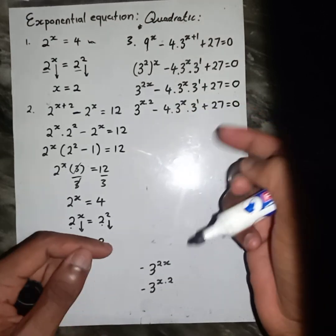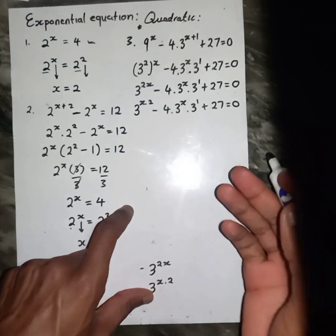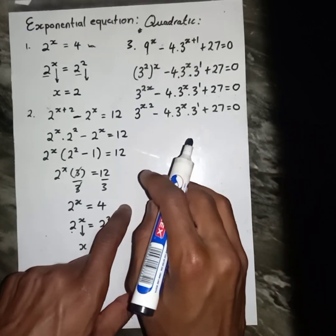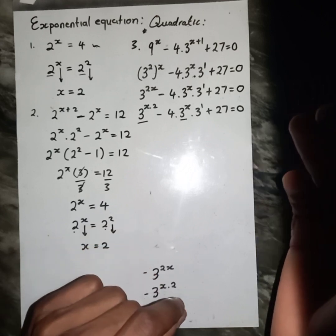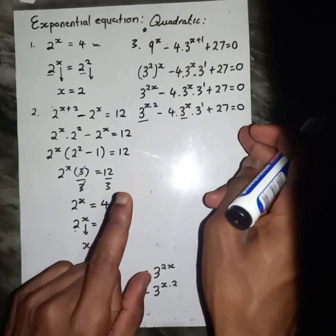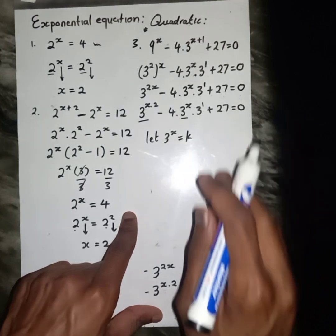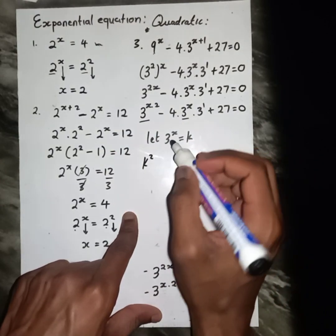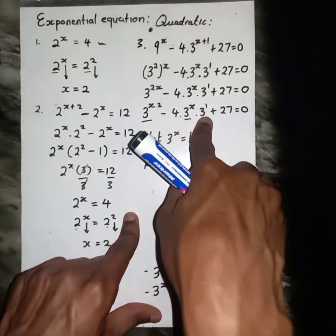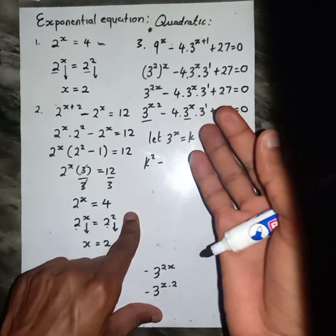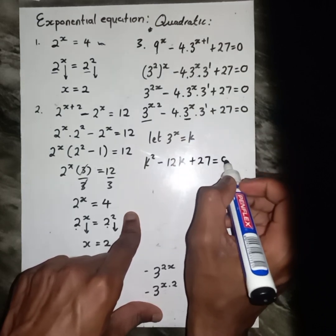So it's like I have 3 to the power x, all squared, minus 4 times 3 to the power x to the power 1, plus 27. There is no need to write the 1, but I write it so you can see. At this point, what I need you to see is that 3 to the power x appears more than once. We can then let 3 to the power x equal k. Where we see 3 to the power x, substitute k. So we get k squared minus 4 times 3 — which gives us 12 — so: k squared minus 12k plus 27 equals zero.